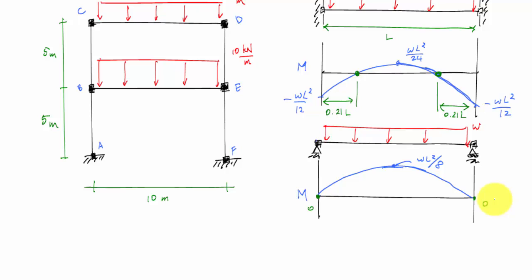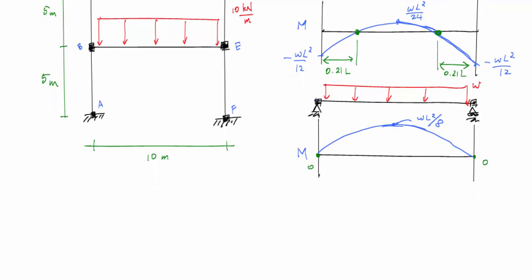So I would say that my inflection point for member CD is somewhere in between 0 and 0.21L. Where that is also depends on the stiffness of the columns and the beam connected at those joints. Since we don't know these stiffnesses, our best guess is to take an average of these two inflection point locations — the average of 0.21 and 0 — which is about 0.1L. So I'm going to assume inflection points at 0.1L.